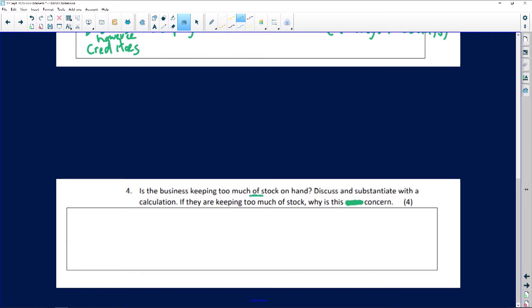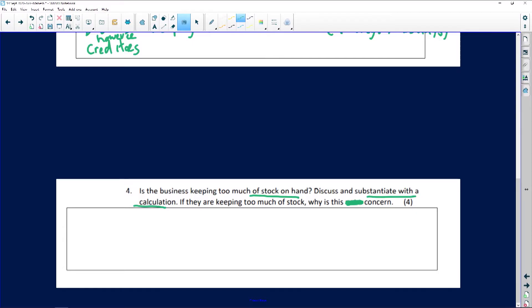Right, the next question numbered as four is: is the business keeping too much of stock on hand? So again, you either say yes or no, discuss and substantiate with a calculation. If they are keeping too much of stock, why is this a concern? Now the original question read why is this not a concern. I want to actually explain why this is a concern and maybe we can look at also why it is not a concern. Hopefully I'm not confusing you guys, I'll separate the two.